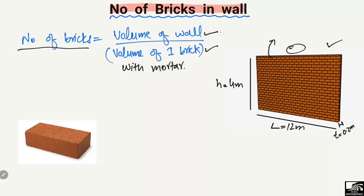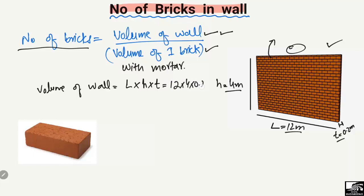To find out the volume of the wall, the formula is: volume of wall equals length multiplied by height multiplied by thickness. Putting in our values — length 12 m, height 4 m, thickness 0.2 m — the volume of the wall comes out to be 12 cubic meters.